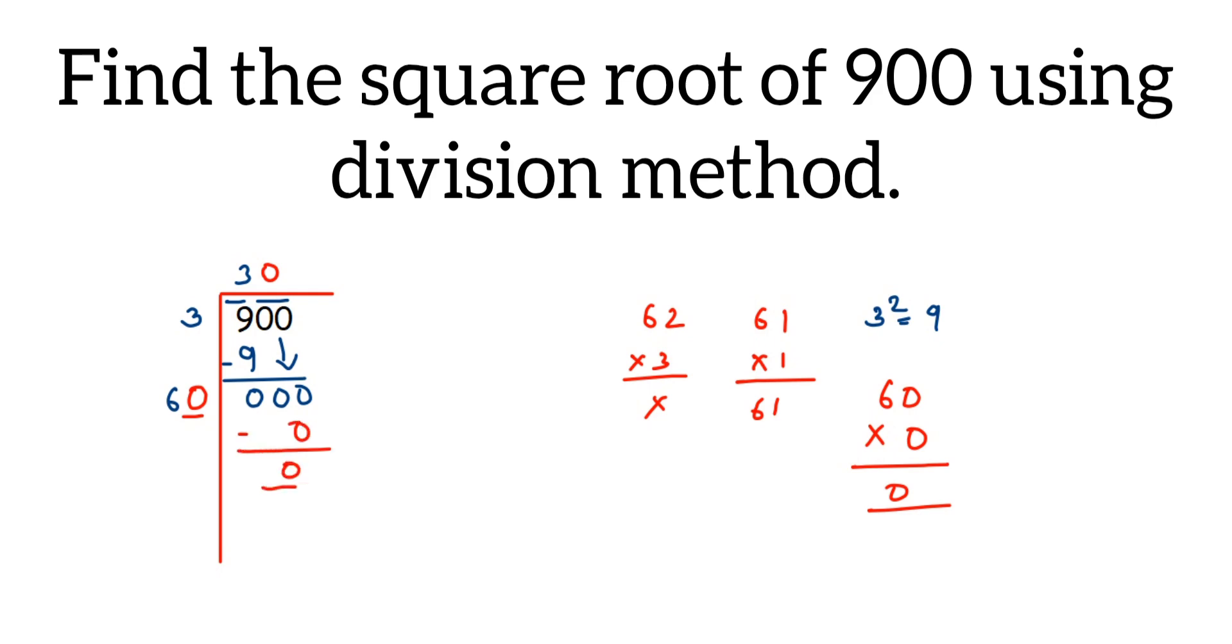Don't stop at this stage because we have dropped the number here which means we have to solve this part too. So we got 0 as a remainder. Therefore square root of 900 is equals to 30. Number we obtained in the question will be the answer.